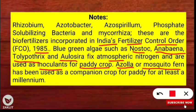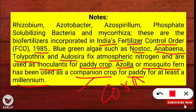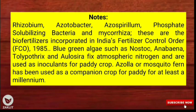Azolla is also known as mosquito fern. It has been used as a companion crop for paddy for at least a million years. Companion crops are crops which are sown together to gain advantage in yield or crop protection from pests. For example, corn is sown along with beans to yield more production together. Similarly, Azolla is a companion crop for paddy production.